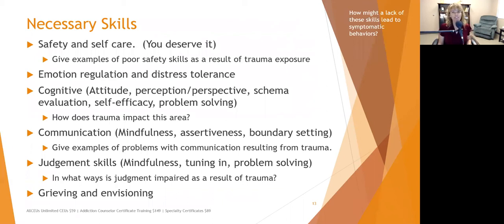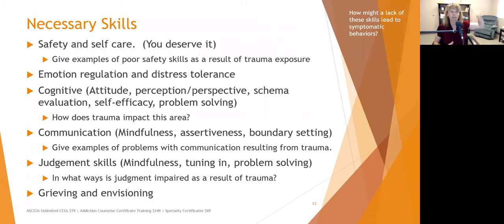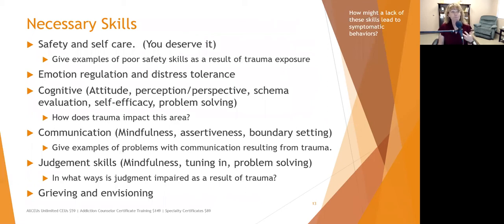Emotional regulation and distress tolerance are imperative for everybody. We need to be able to tolerate distress when it happens — feel it, acknowledge it, radically accept it, use distress tolerance skills to get into our wise mind, and then choose the best next step to improve the moment. Our feelings are our brain's way of saying 'we've been here before, don't want to be here again' — we want to thank our brain for that heads up and check it out.